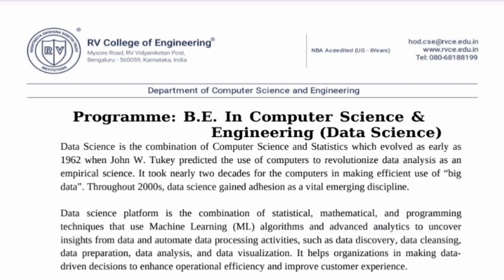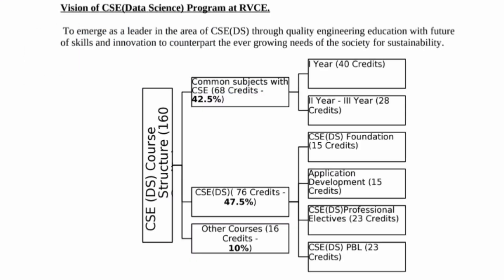Sometimes it is also called AIDS — Artificial Intelligence and Data Science. More or less it is a similar syllabus, similar in structure, which is followed across all the colleges in Karnataka as well as India. This is just to give you a brief guideline. This is basically the vision of the CSC or CSC Data Science program at any college — this one is from RV College of Engineering.